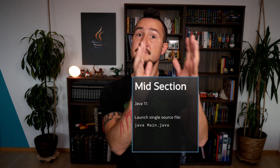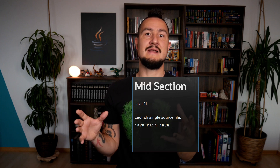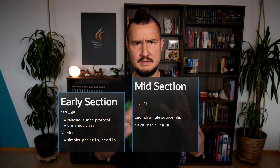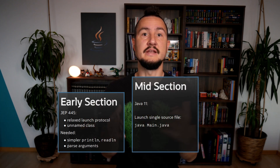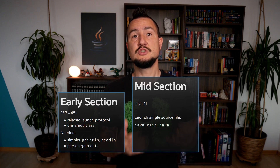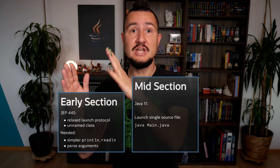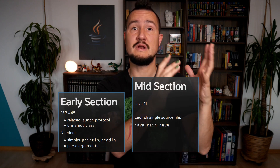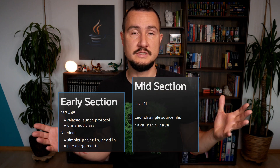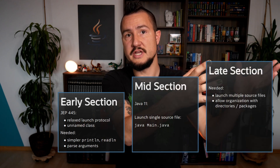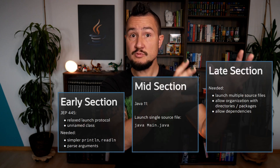This proposal adds another section to the on-ramp from Java or even programming beginner to Java developer. I see the single-source-code execution introduced in Java 11 as the midsection of that ramp, and the simplified launch protocol and unnamed class as part of its early section. What I think is still missing are simple ways to read from and write to the terminal — simpler than System.out.println — and an easy way to parse the argument array. Interaction with the terminal was mentioned by Brian Goetz last October, so I'm sure that is being considered. What is still missing from that picture is the late section of the ramp: turning a single-file script into a small local project with multiple files and maybe even third-party dependencies. And this is where the JEP draft comes in.